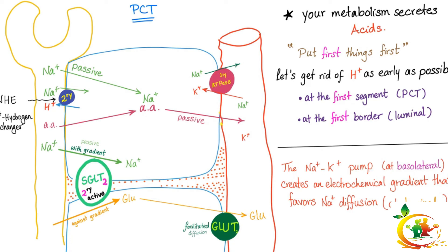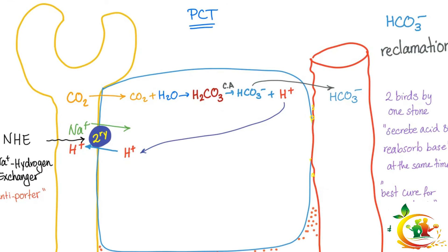Let's talk about the sodium-potassium pump. We spend energy at the sodium-potassium ATPase at the basolateral border. Sodium flows from the tubular cell to the peritubular capillary, decreasing sodium concentration in the tubular cell, which in turn favors movement of sodium from the tubular lumen into the tubular cell — down the gradient.